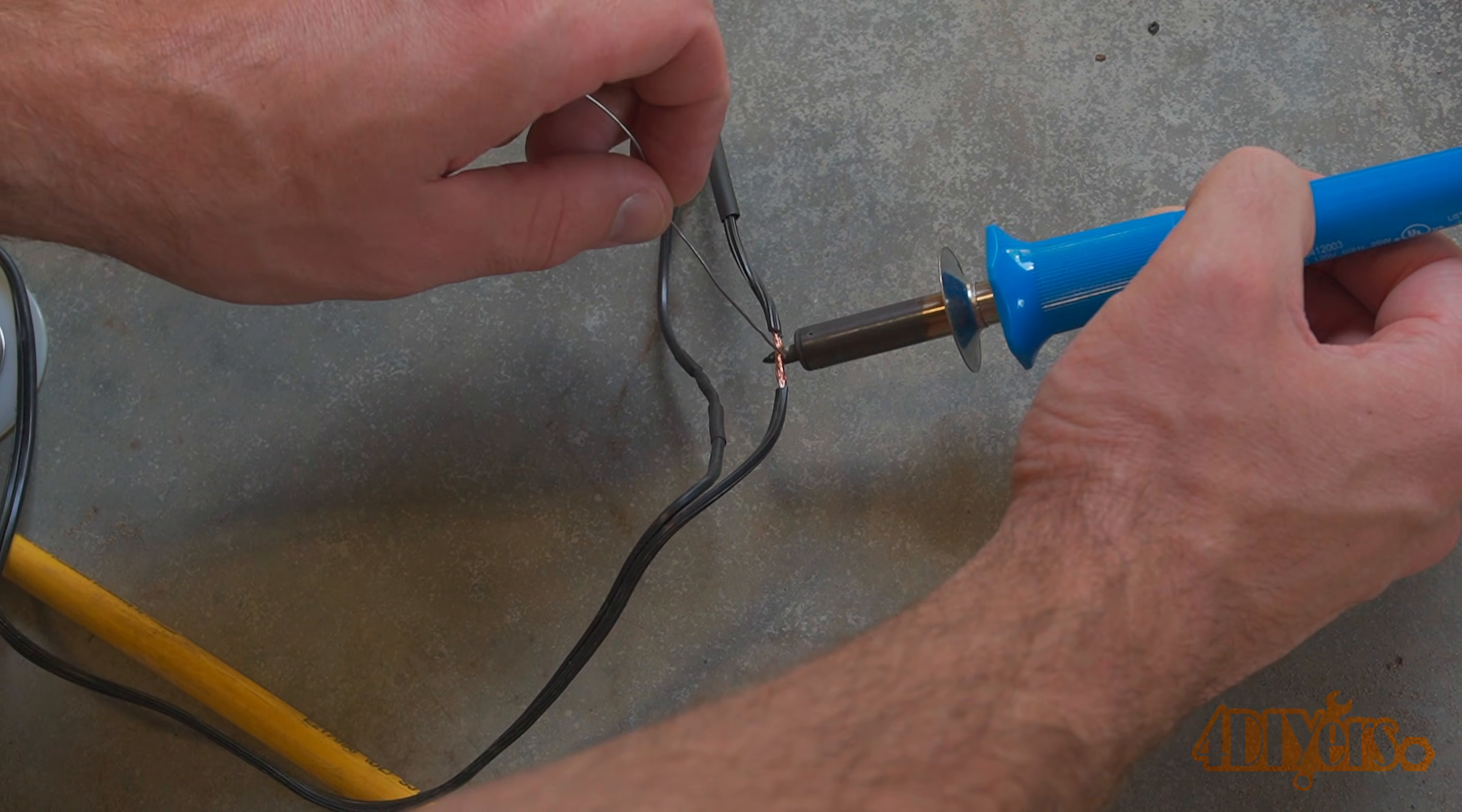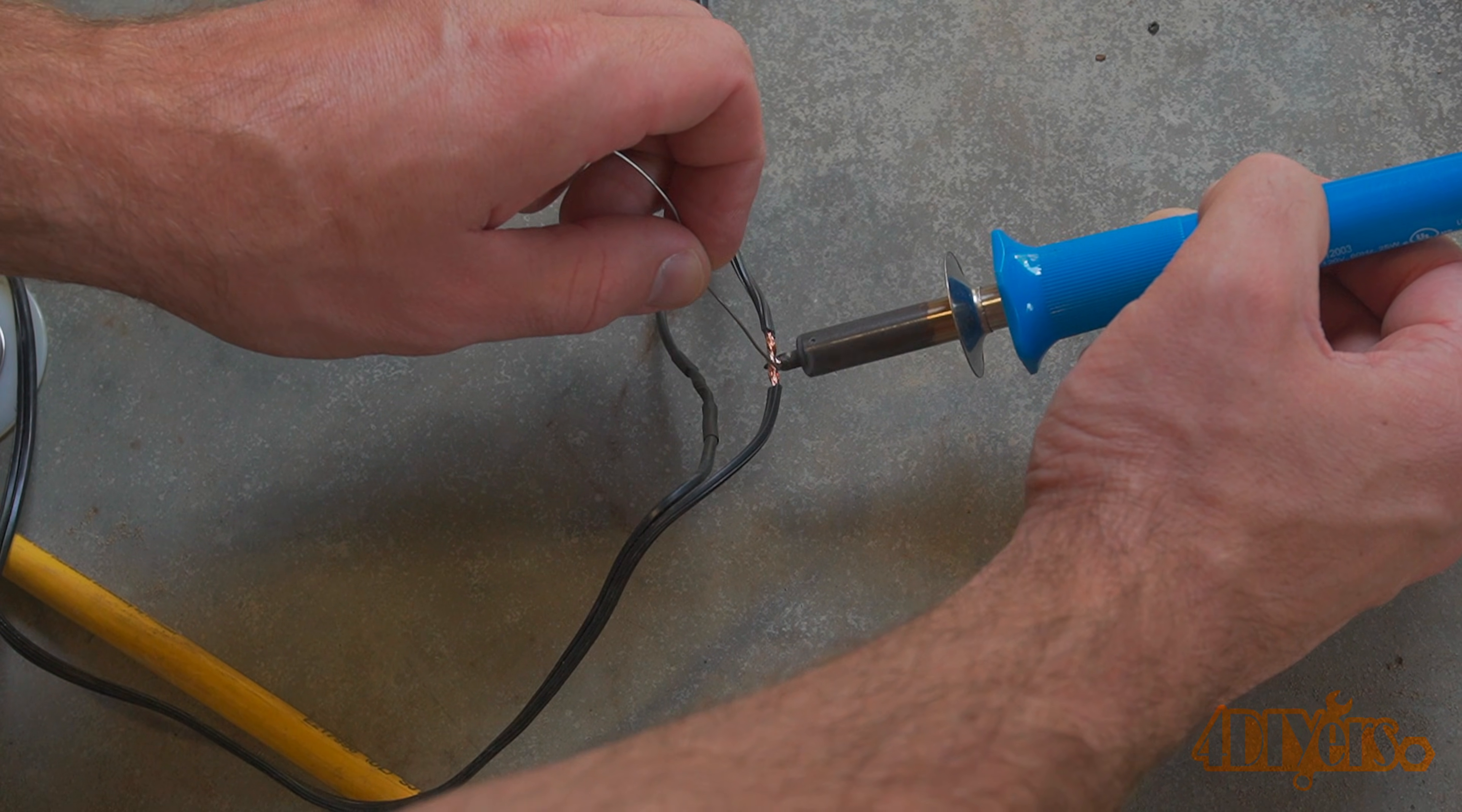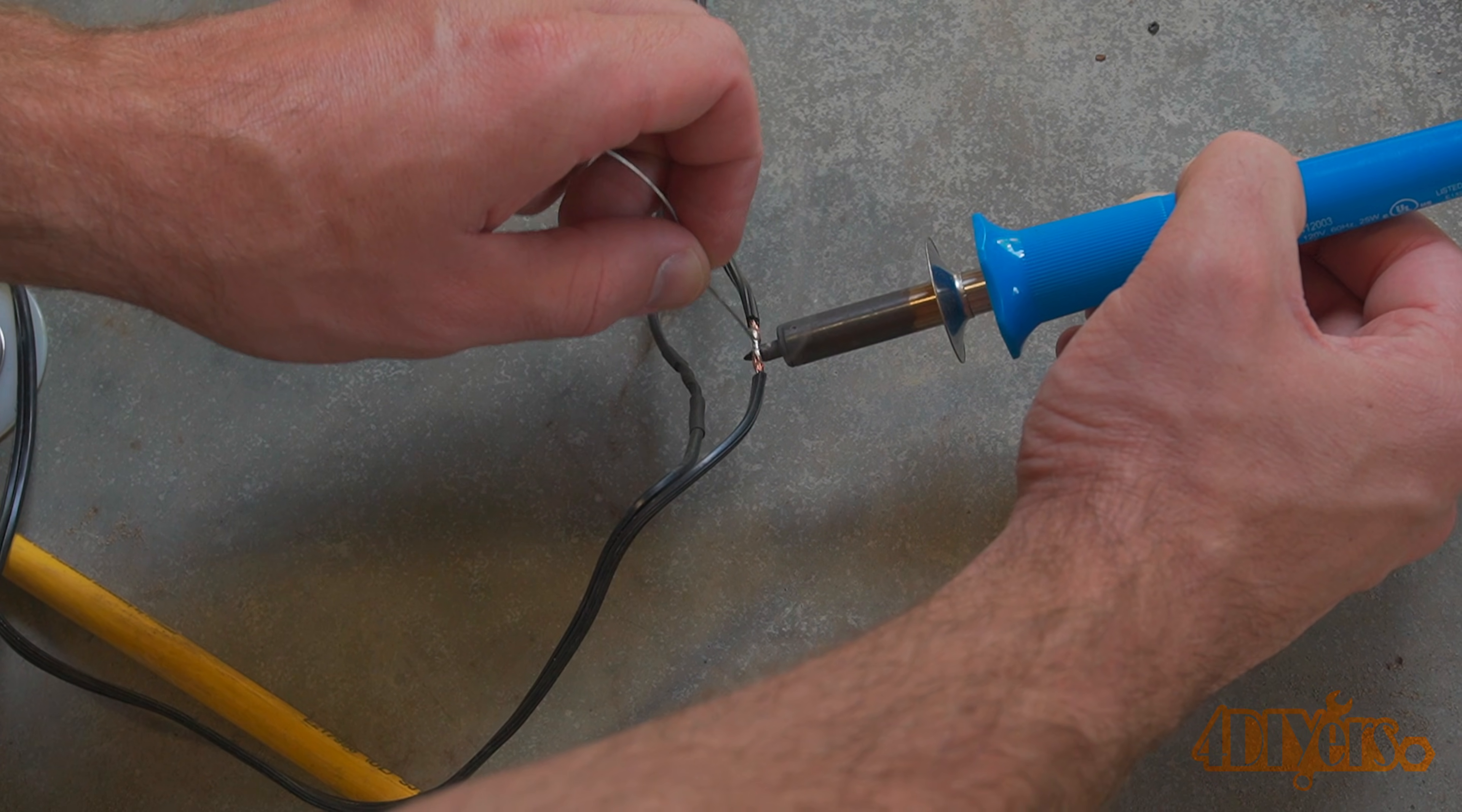I also installed an extension for this wire so I was able to reach the cigarette lighter port in my cuddy cabin. Again the insulation was stripped back, the wires were then soldered, and then heat shrink was applied.